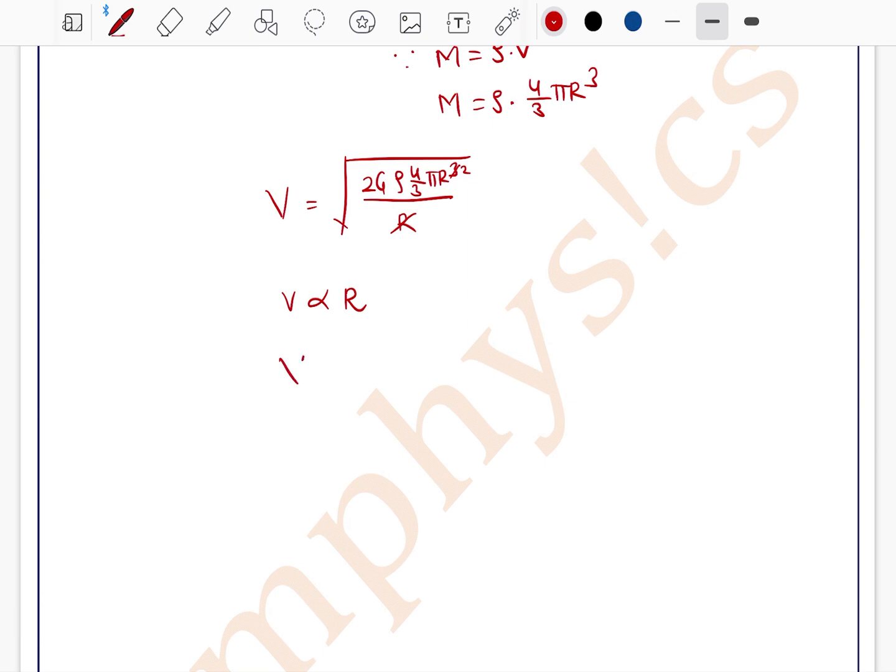Now radius becomes 4 times of the earth. So we can write velocity of a planet is directly proportional to 4 times of r and velocity of earth is directly proportional to r. So velocity of planet is equal to 4 times of velocity of earth.